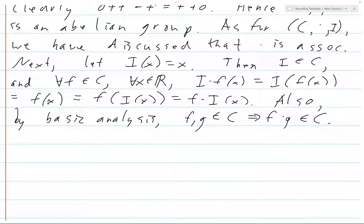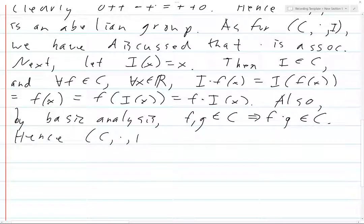So, if you were starting this textbook without prior analysis background, this might not be obvious, but there may be appendices covering continuity and basic topology. In any case, this gives us that C with composition is a monoid.